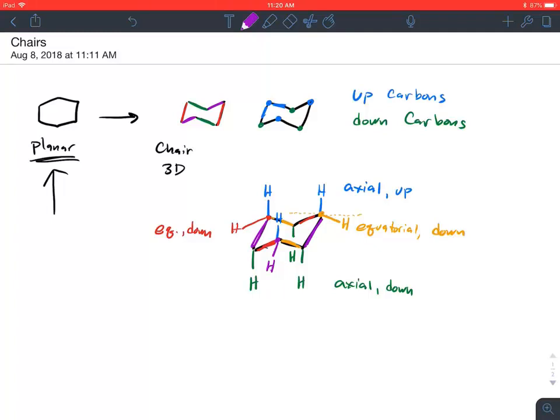Now be careful here. A lot of students like to draw that purple hydrogen like that, and that's not going to work. For one, it clutters up the drawing. And if you look on your model kit, you'll see that that H doesn't really exist in that position. Be sure that your H is projected towards you.